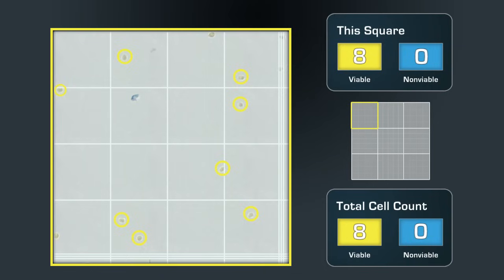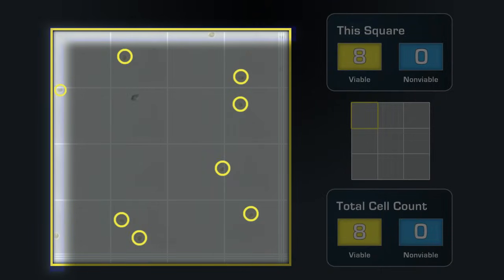So what about the cells that are touching the outside boundaries of the square? In our lab we count the cells that touch the top and left boundaries and we ignore the cells that touch the right and bottom boundaries. Nine, ten.